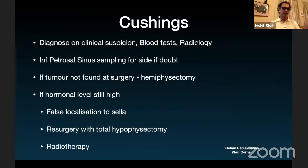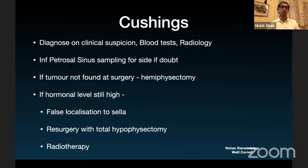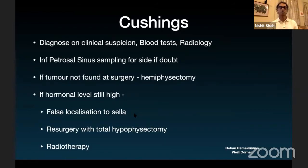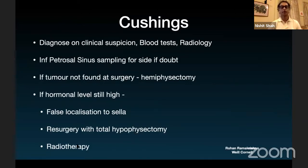If there is doubt about which side the Cushing's tumor is on, you perform IPS (inferior petrosal sinus) sampling, which shows more secretion on the left or right. Accordingly, you look for the tumor on that side. If not found, you proceed with a hemihypophysectomy on that side. If hormonal levels still remain high, consider whether it's coming from the adrenals or another site, or return for complete hypophysectomy. Radiotherapy is also an option.